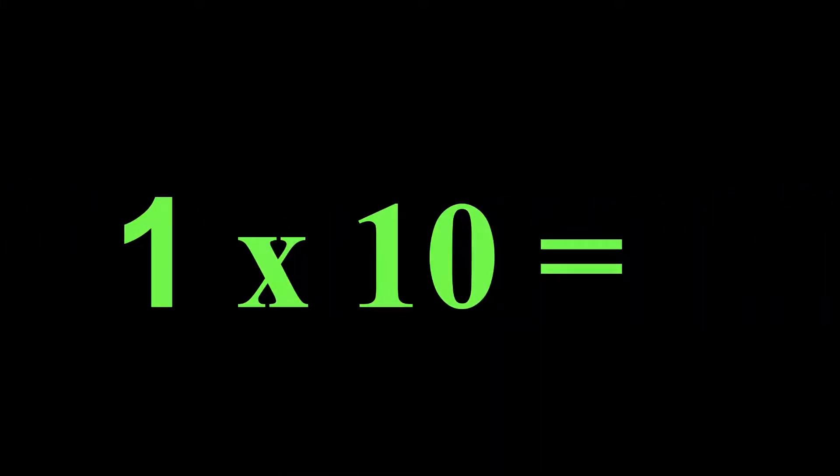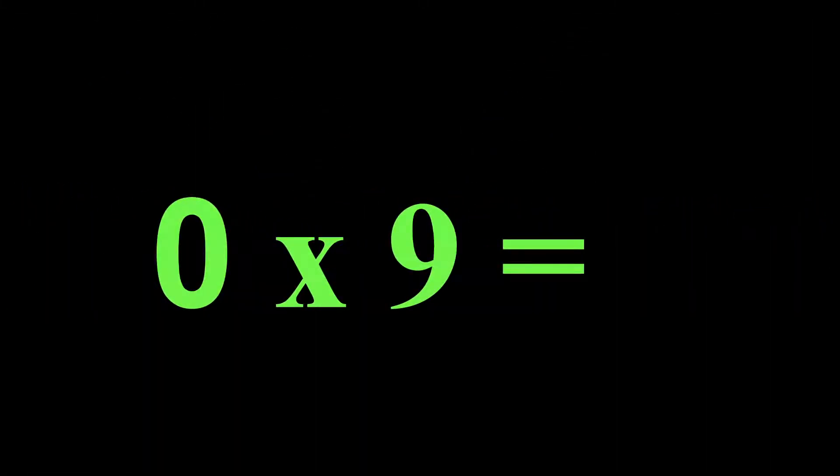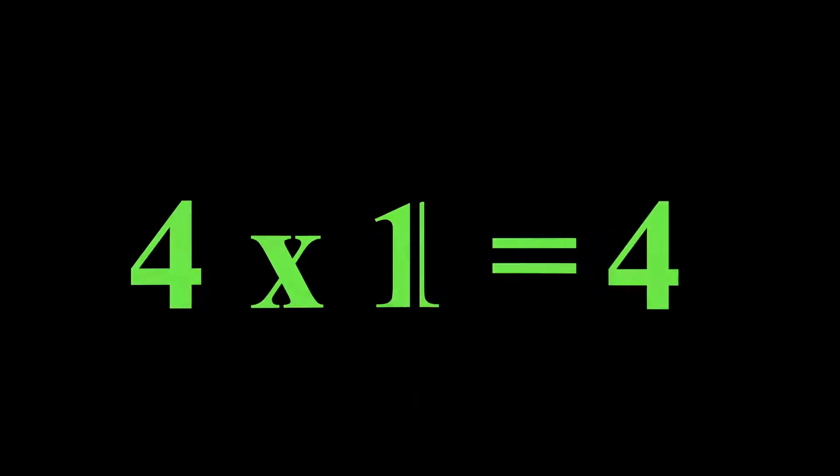One times ten would be our one rule, and so the other number in this case is ten. Zero times nine is the zero rule. So zero times nine is zero. Doing okay. Four times one is nice and easy, just going to be the other number, which is four.